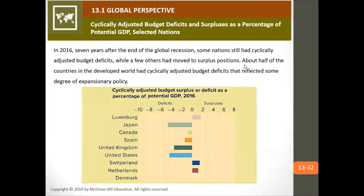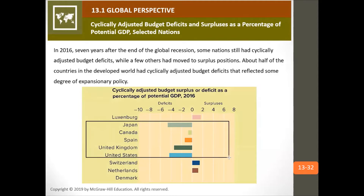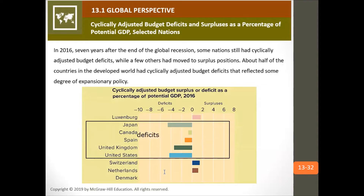In 2016, a lot of economies had issues with fiscal policy. The United States, United Kingdom, Japan, Canada, and Spain all ran deficits, while Luxembourg, Switzerland, and the Netherlands ran surpluses.